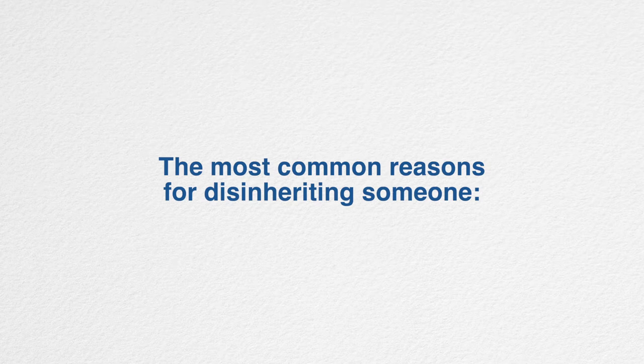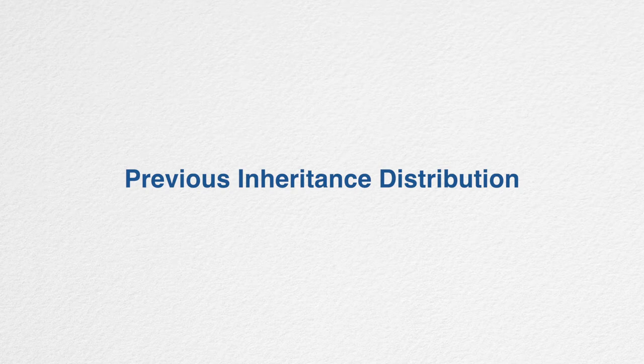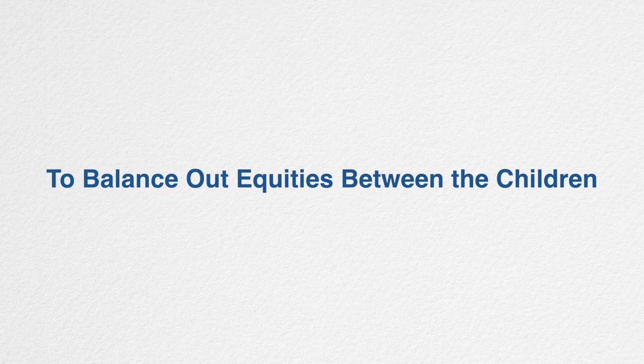The most common reasons for disinheriting someone: First, previous inheritance distributions. If the parent has given the child their inheritance during their lifetime, it's quite common for the parent to disinherit that child completely or partially, simply to balance things out among others who may not have received similar gifts.